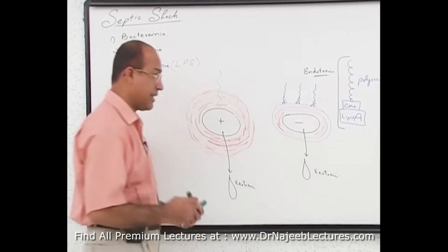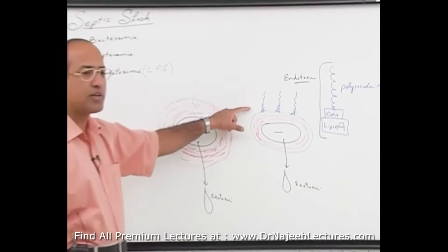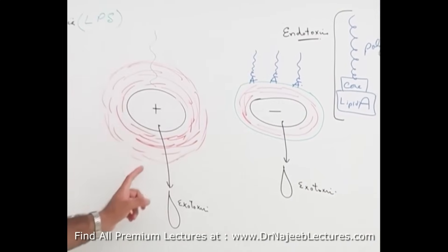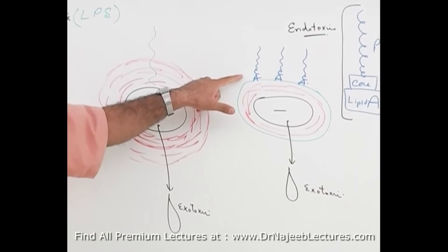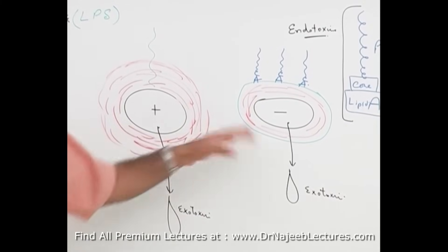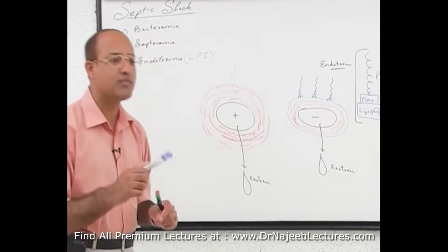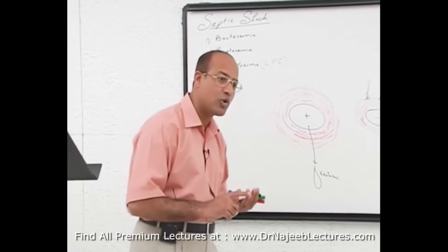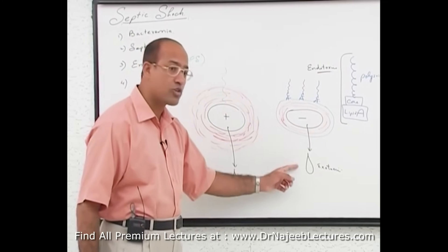Comparing endotoxins and exotoxins: Number one — endotoxins are limited only to gram-negative bacteria, while exotoxins may come from gram-negative or gram-positive bacteria. Number two — endotoxins are an integral structure of gram-negative bacteria, while exotoxins are not integral structures. Number three — all endotoxins work in the same fashion, whether from Salmonella, Klebsiella, or E. coli — they all damage the body in the same way.